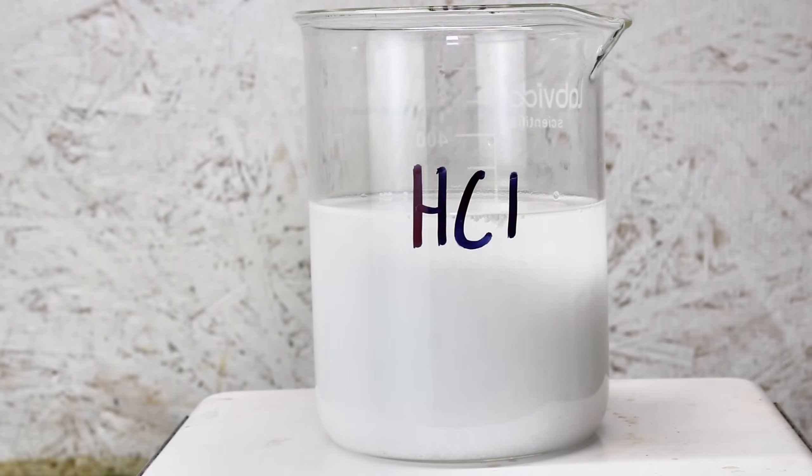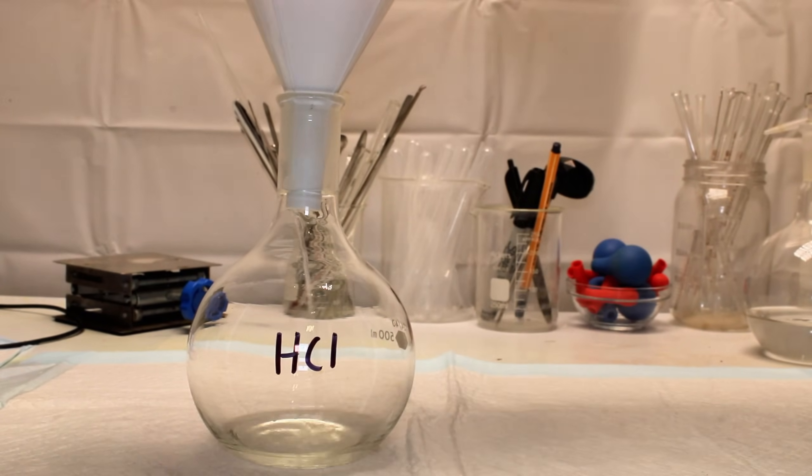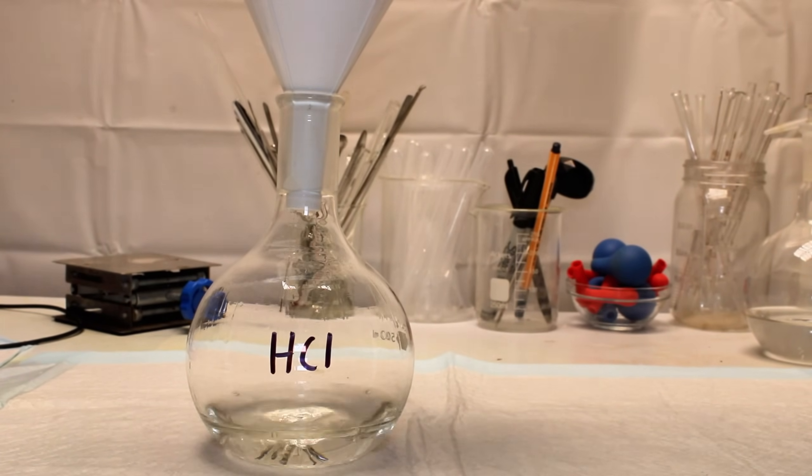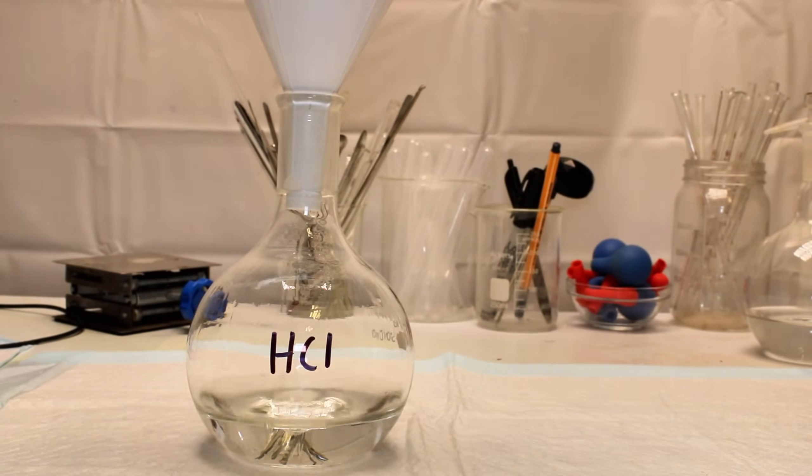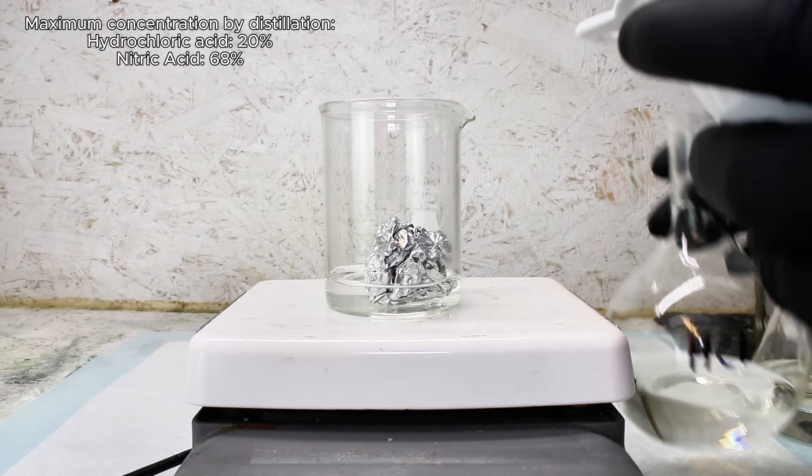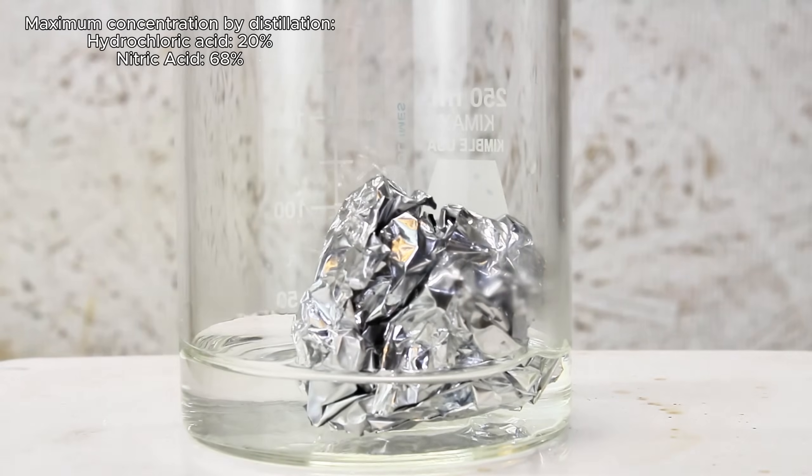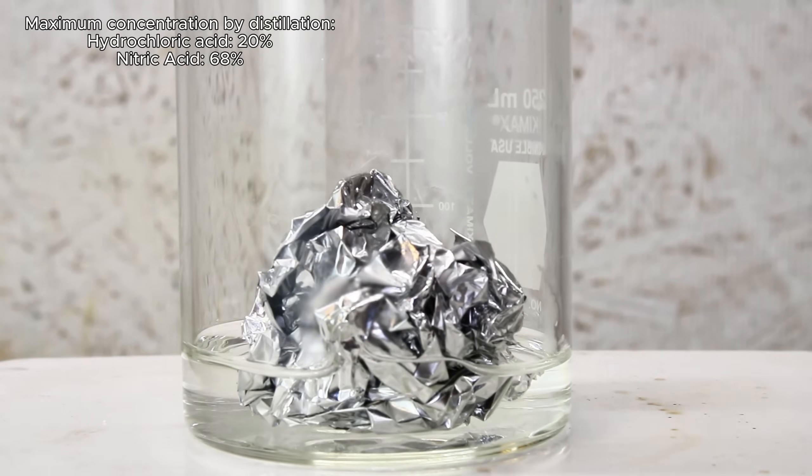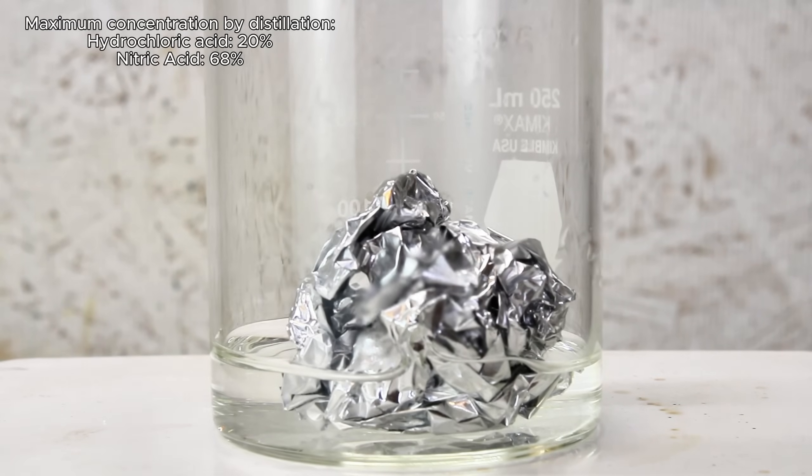That said, making acids by a double displacement like this is possible, but not ideal. Technically, the weak hydrochloric acid here can be boiled down or distilled to a maximum concentration of 20%, and the same goes for the very weak nitric acid to a maximum of 68%, but at this point, that method really isn't the easy one anymore.